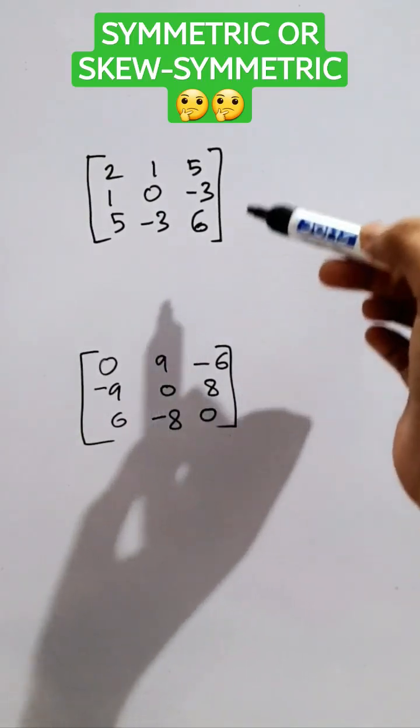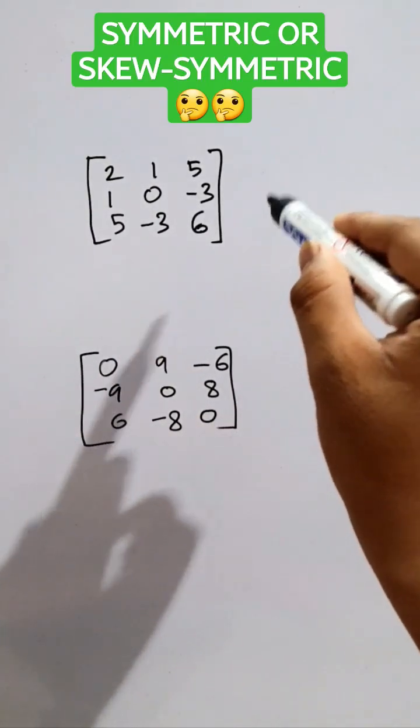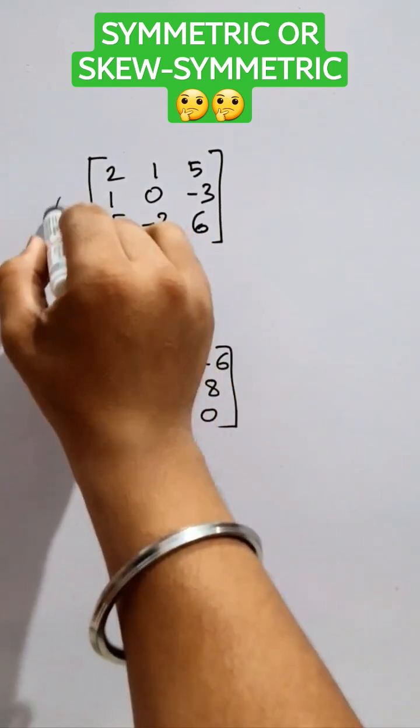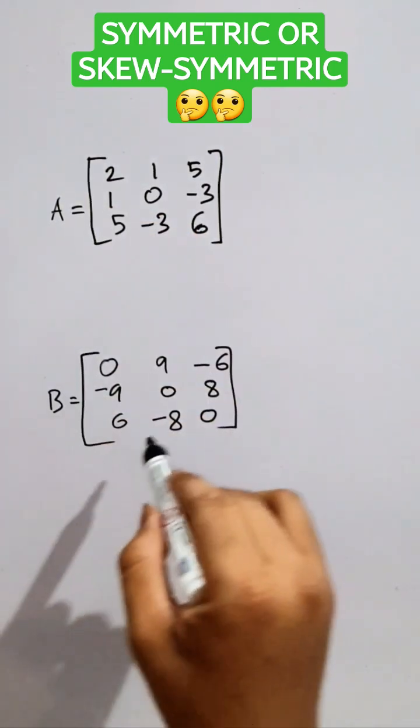Today, we will learn how to check whether the given matrices are symmetric or skew-symmetric. First of all, name it as A matrix and name it as B matrix.